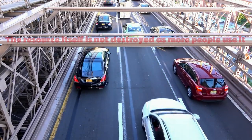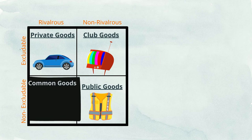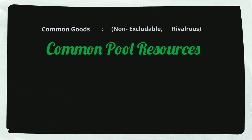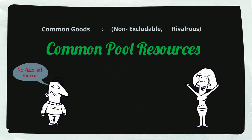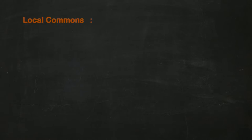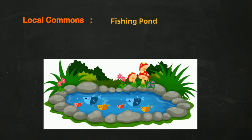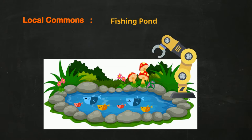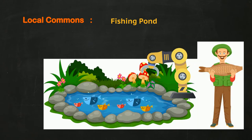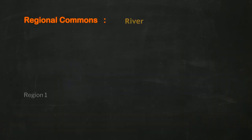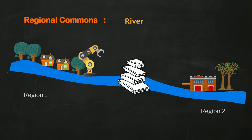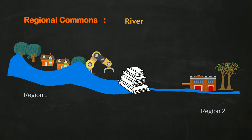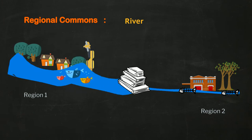This cannot be said for common goods. In common goods, also known as common pool resources, the use of the resource by one person can reduce its availability for another. For example, in a local commons like a neighborhood fishing pond, if someone with better skills or tools extracts most of the fish, it will leave very little for the rest of the community. Or, in a regional commons like a river, if one region extracts too much water or builds a dam to stop the river flow, it decreases the other region's ability to derive the same benefits from the river.